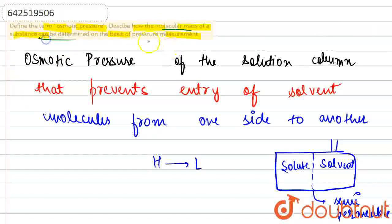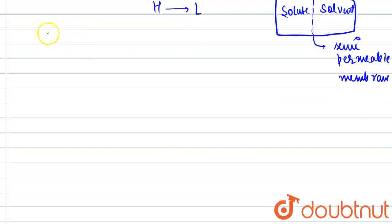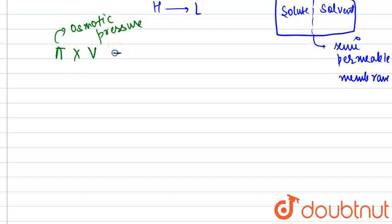The next part is asking how the molecular mass of a substance can be determined from osmotic pressure measurements. We have an expression: π (pi) is the osmotic pressure - this is the symbol we use to denote it - multiplied by V (volume of the entire system), equals n (number of moles) multiplied by R (gas constant) times T (temperature).